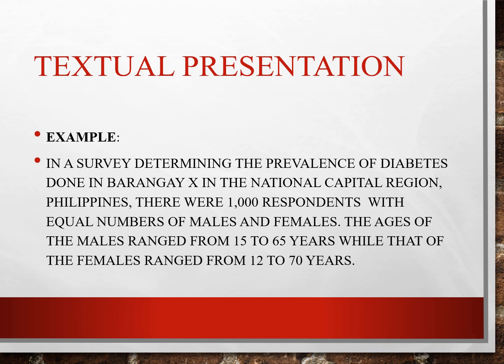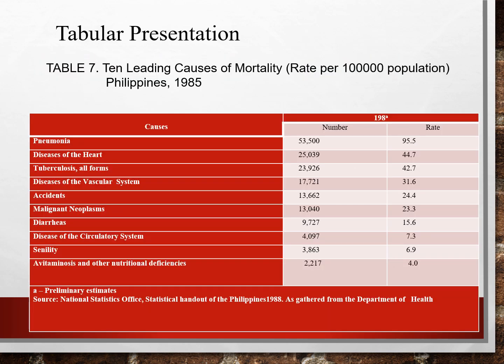For example, read the following: In a survey determining the prevalence of diabetes done in Barangay X in the National Capital Region, Philippines, there were 1,000 respondents with equal numbers of males and females. The ages of the males range from 15 to 65 years, while that of the females range from 12 to 70 years.